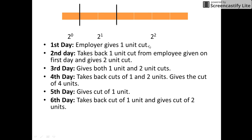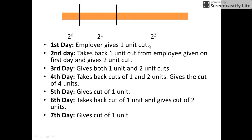At the end of the sixth day, he takes back the one-unit cut from the employee and gives the two-unit cut, so the employee now has cuts of four units and two units respectively. Finally, on the seventh day, he gives the one-unit cut to the employee. In this way, the employee gets all seven units of the gold rod.